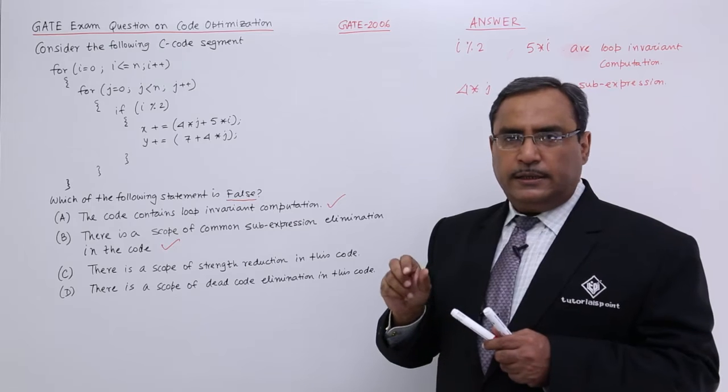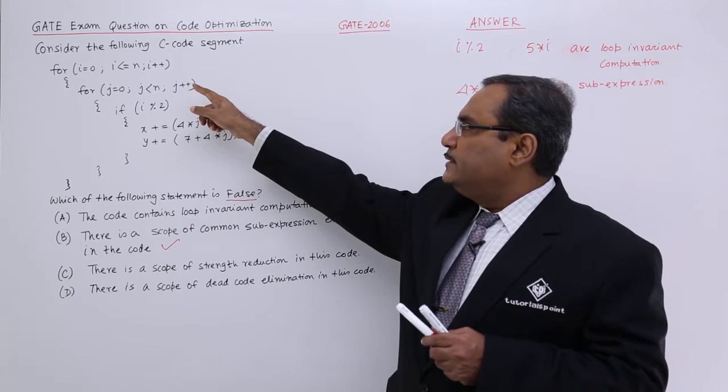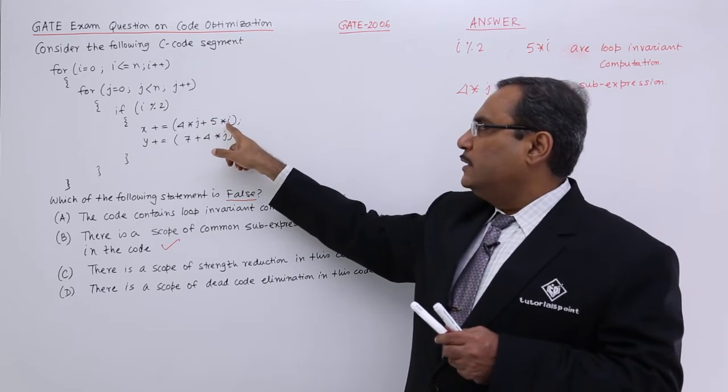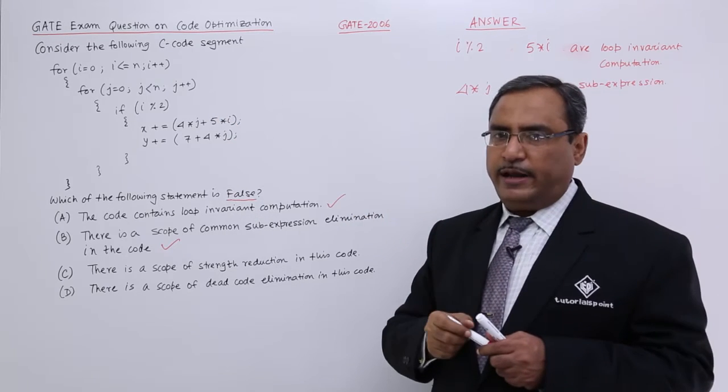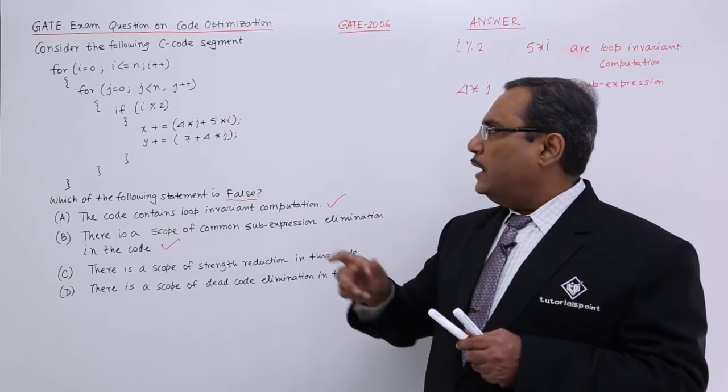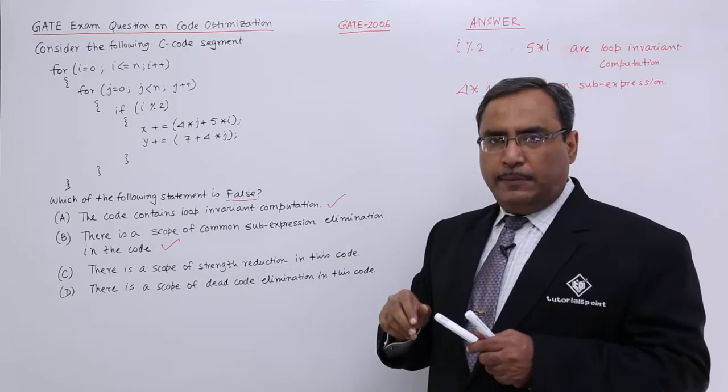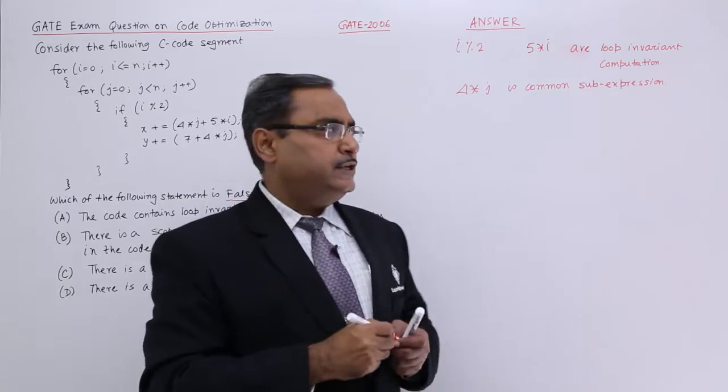This 5 star i, you see here i is increasing by 1 and here the this 5 star i is getting increased by 5 each and every time. This 5 star i can be written in this way. It is my suggestion.